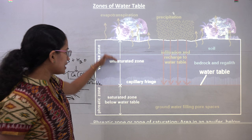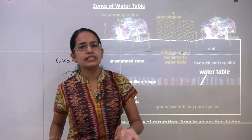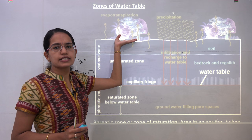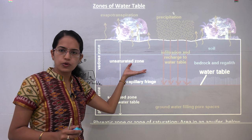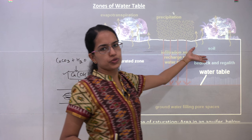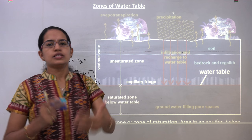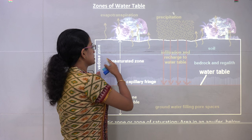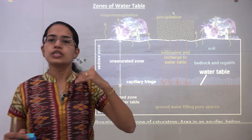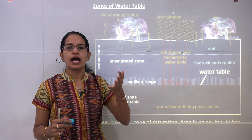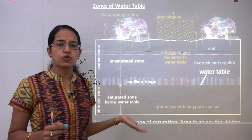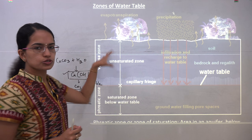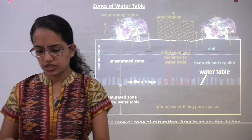The vadose zone lies above the water table and is the zone of unsaturated water, and the level of this vadose zone changes. In normal circumstances, if there is a rainy season this level would go up; if it is a dry or drought season, this level would go down. So there are changes in the vadose zone due to changes in weather phenomena. However, there are also changes that occur in the vadose zone due to change in topography — the upliftment and surface denudation that take place, which leads to lowering of the water table. All these factors affect the changes in the vadose zone.